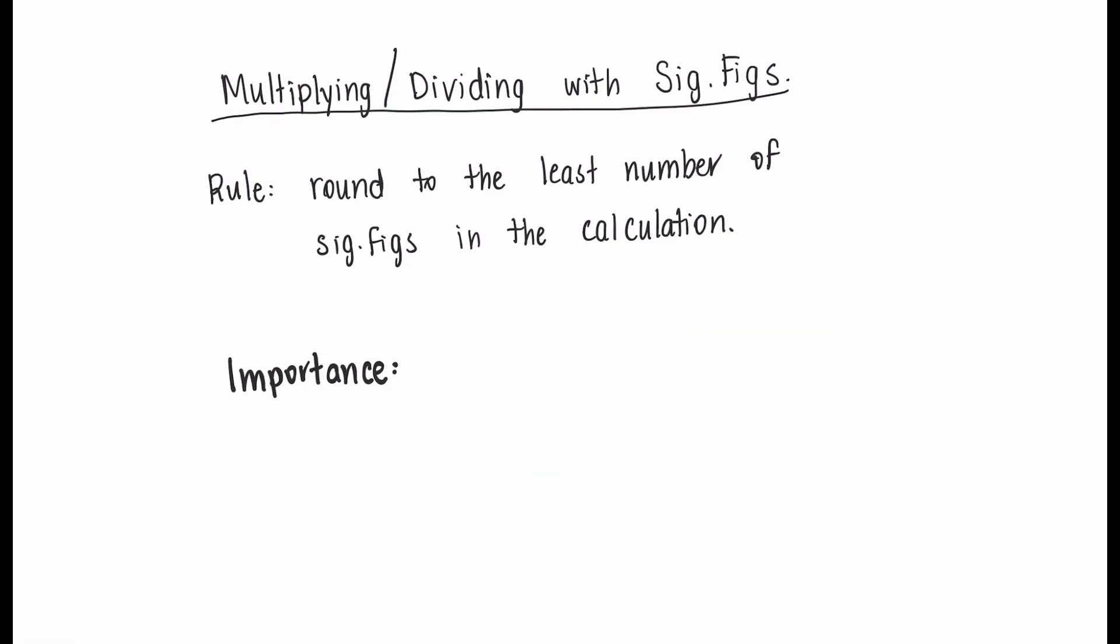Now you might be wondering why scientists put such high importance on significant figures, and why we have these rules to follow. And it's because in science, precision is so important. These numbers that we're using represent data. And at the end of the day, we don't want our final answers to be more precise than our starting values.